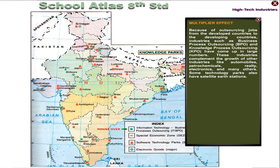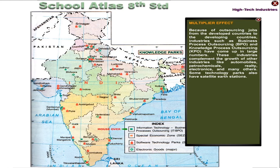Because of outsourcing jobs from developed countries to developing countries, industries such as Business Process Outsourcing and Knowledge Process Outsourcing have come up in large numbers. These industries complement the growth of other industries like automobiles, petrochemicals, realty, electronics and many others. Some technology parks also have satellite earth stations.